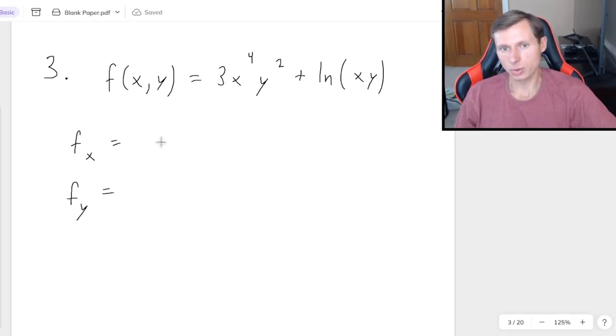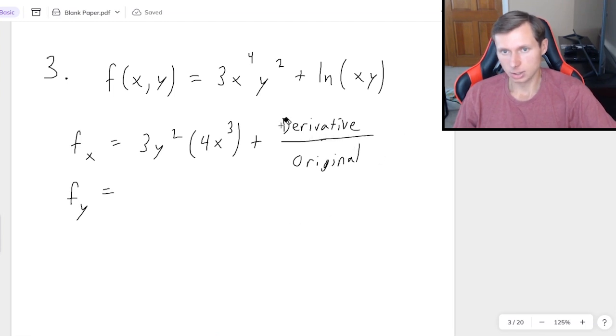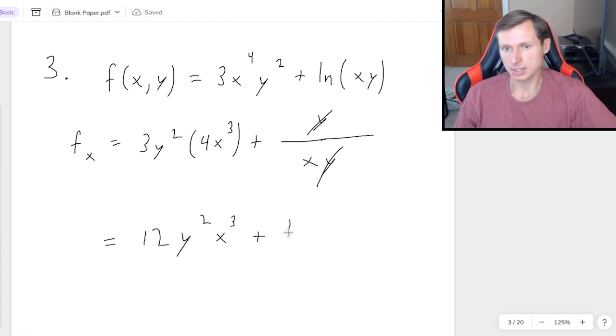So first, why don't you pause the video and find fx and fy on your own. You should be able to do it for these two. If you can't, that's fine. I'm going to show you the solution right now. So first, for x, 3y squared, the coefficient, derivative of x to the fourth being 4x cubed. I'll simplify that in the next step. And then plus natural log of x times y. So traditionally, the derivative of natural log of anything is the derivative in the numerator and the original in the denominator. So in this case, the derivative of x times y is just going to be a coefficient rule, y. And the original is xy. And we even notice that the y's cancel here, leaving me with a final answer of 3 times 4, 12y squared x cubed, order of x and y technically does not matter, plus 1 over x. There's my partial x derivative.